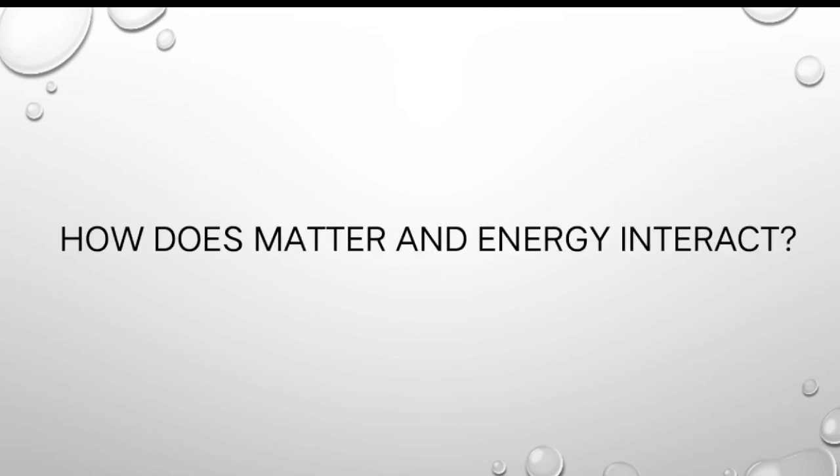How does matter and energy interact? In natural systems, both energy and matter are conserved within a system. This means that energy and matter can change forms, but cannot be created or destroyed. Energy and matter are often cycled within a system, and different forms of matter and energy are able to interact.